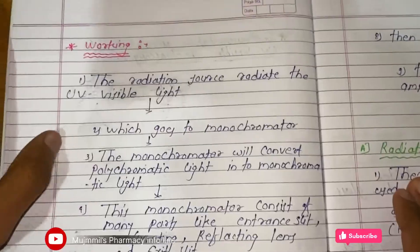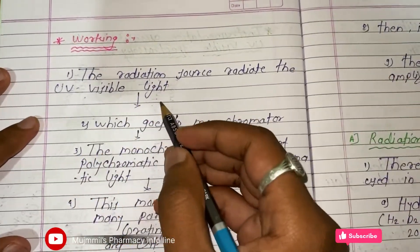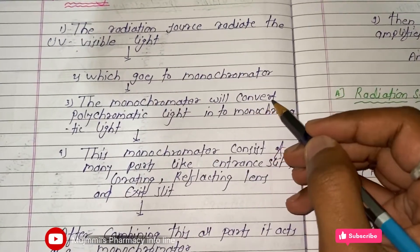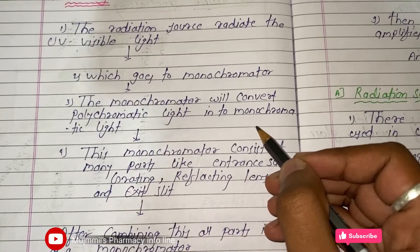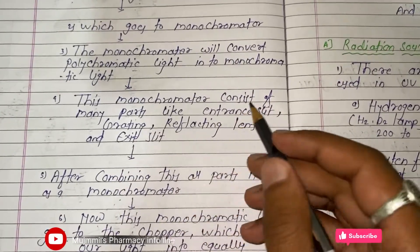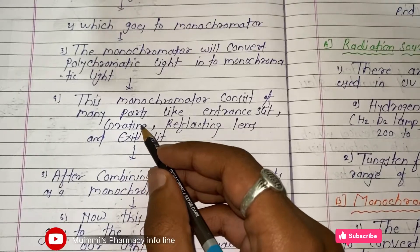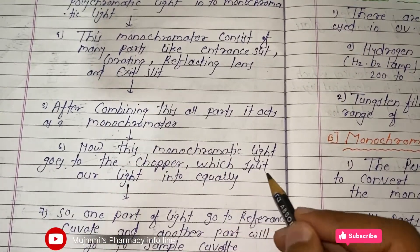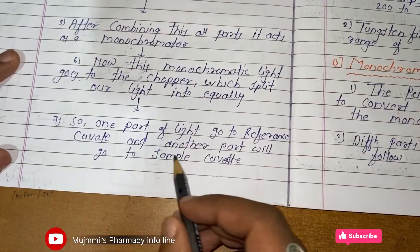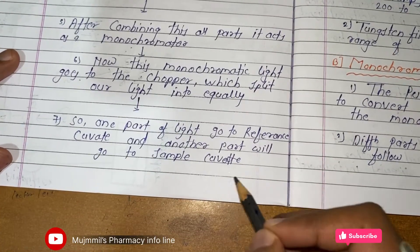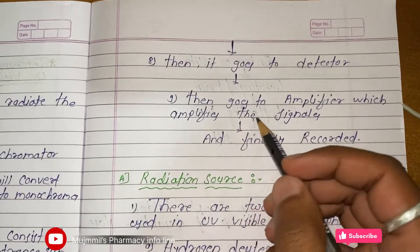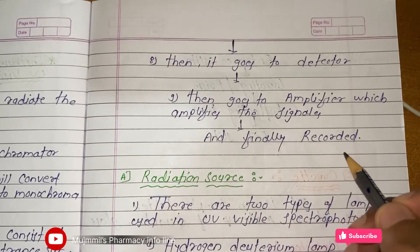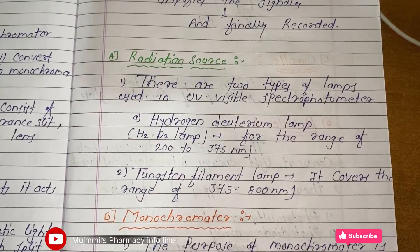In detail: the radiation source radiates UV-Visible light, which goes to the monochromator. The monochromator converts polychromatic light into monochromatic (single wavelength) light. The monochromator consists of an entrance slit, gratings or prism, reflecting lens, and exit slit. The monochromatic light goes to the chopper, which splits it into two equal parts — one to the reference cuvette and one to the sample cuvette. Detectors convert light energy into electrical signals, the amplifier amplifies them, and the result is recorded.